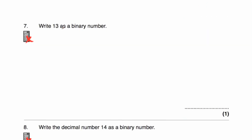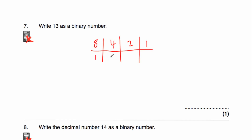Question seven says, write the number 13 as a binary number. Starting with 1, multiply by 2 is 2, multiply by 2 is 4, multiply by 2 is 8. Multiply by 2 would be 16, which is too big. To write 13: we use 8, then adding 4 gives 12. We don't need any 2s — that would be 14. We're at 12, so we need a 1. So 8 plus 4 is 12, plus 1 is 13. The number 13 as a binary number is 1101.